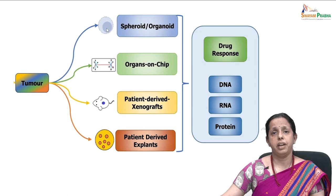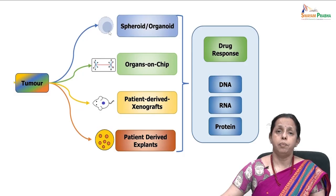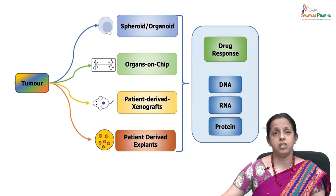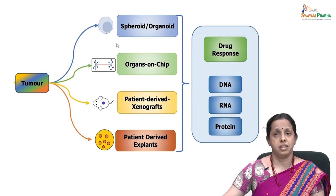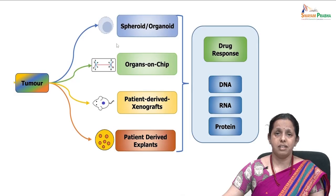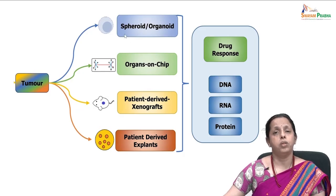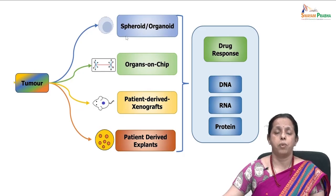Spheroids are cells — it could be even a single cell line — which are allowed to grow in the presence or absence of drug, where the cells are allowed to form clusters rather than forming 2D monolayers. As a result, we would be able to have a necrotic zone along with a zone of living cells. We can produce hypoxia-like conditions by growing spheroids.